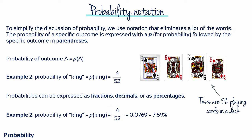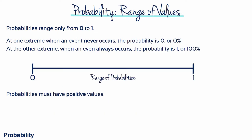Any of these forms — fraction, decimal, or percentage — is an acceptable way to express probability. You should also note that all possible probability values are contained in a limited range. At one extreme, when an event never occurs, the probability is 0 or 0%. At the other extreme, when an event always occurs, the probability is 1 or 100%. Thus, all probability values are contained in a range from 0 to 1 and they always have positive values.